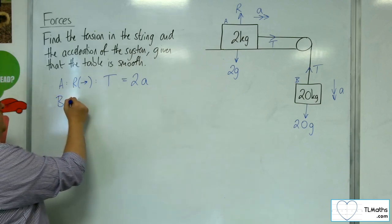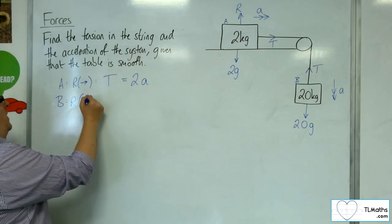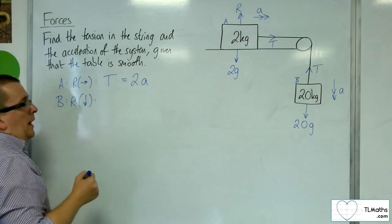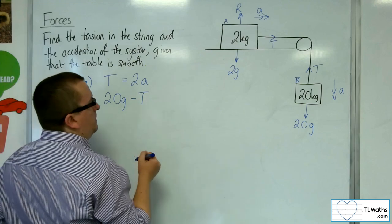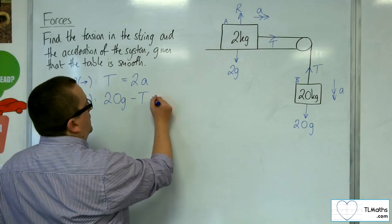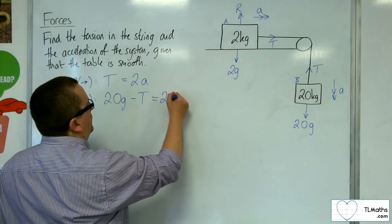Let's look at particle B. In order to do that, I resolve downwards. So I've got 20g working downwards. I've got the tension working against me, and I've got that equal to the mass times the acceleration.